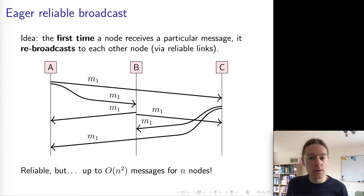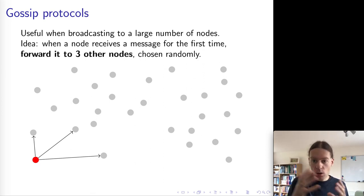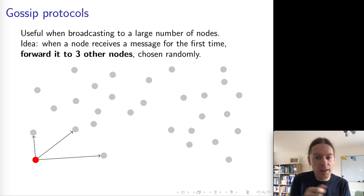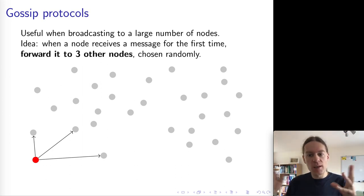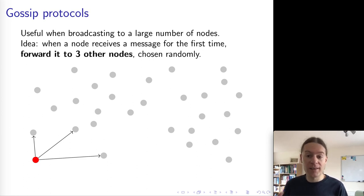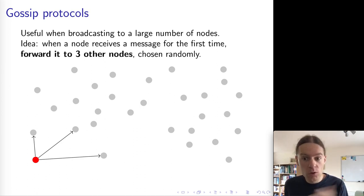Lots of different algorithms have been designed to optimize this. One particularly interesting group of algorithms are called gossip protocols. They are modeled on the way gossip might spread through a network of people, where one person hears gossip from somebody and then tells a few other people. Eventually this information spreads through a population. They're sometimes also called epidemic protocols because they're somewhat similar to the way an infectious disease might spread through a population. In this example, each little blob is a node in the system, and I've taken as the parameter that each node sends the message to three other nodes.